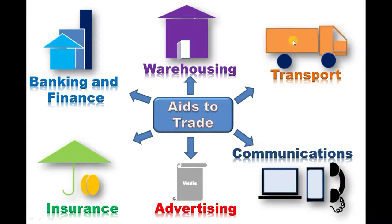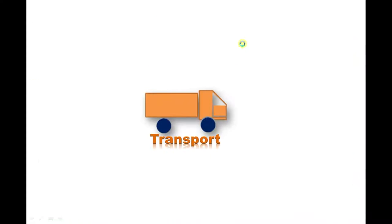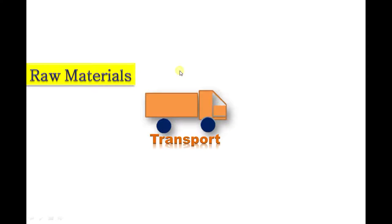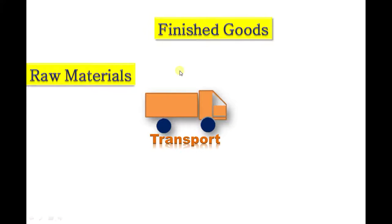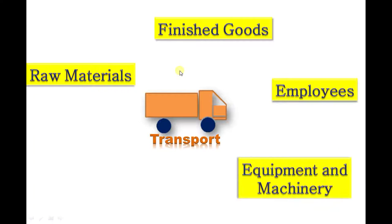We start by looking at the importance of transport. Transport helps firms in different ways — it can help in the carriage of raw materials and finished goods to the market, employees to and from work, and equipment and machinery needed by producers and traders. Advertisement can also be done through transport.